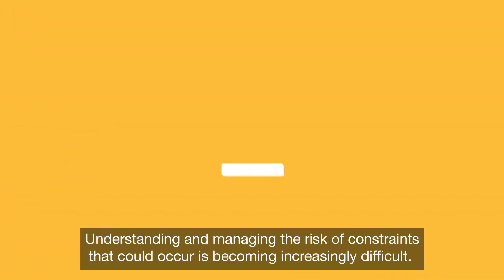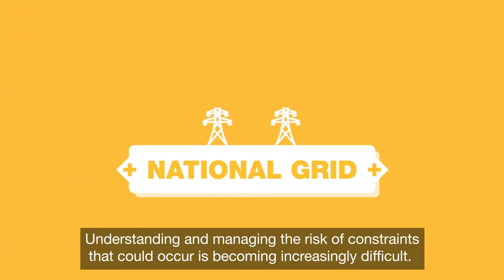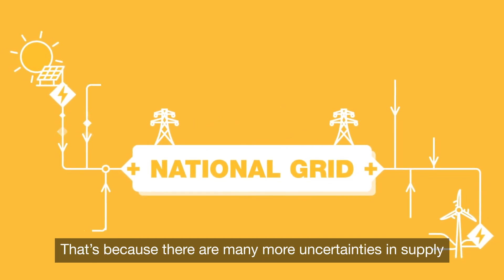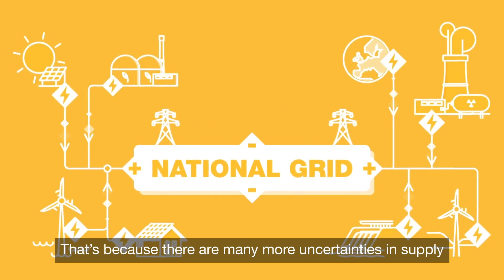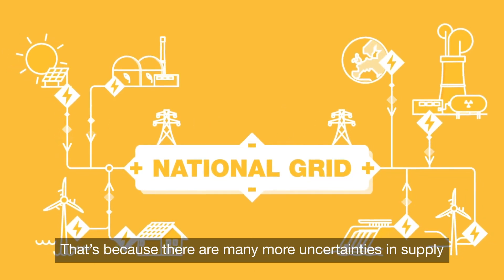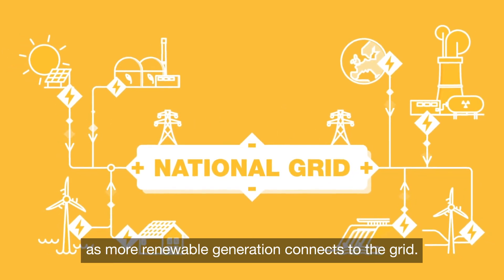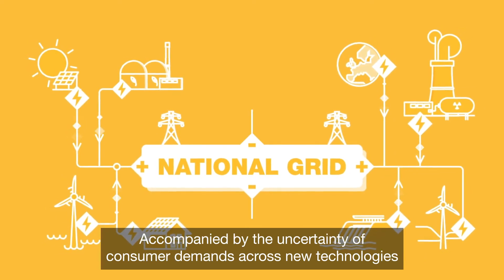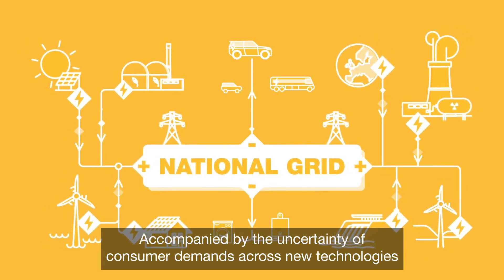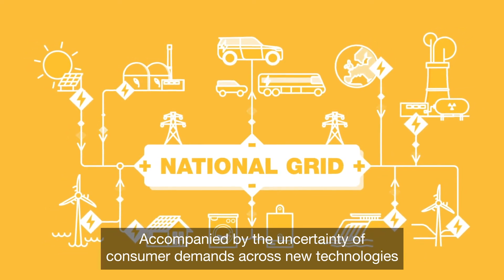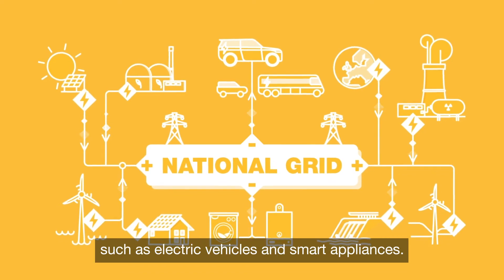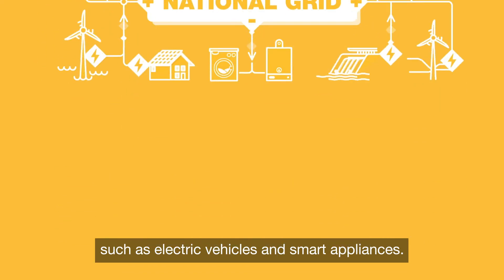Understanding and managing the risk of constraints that could occur is becoming increasingly difficult. That's because there are many more uncertainties in supply as more renewable generation connects to the grid, accompanied by the uncertainty of consumer demands across new technologies such as electric vehicles and smart appliances.